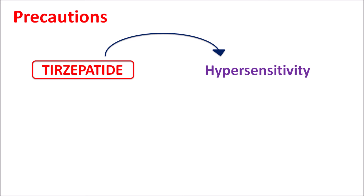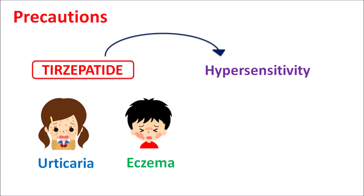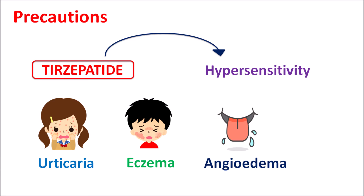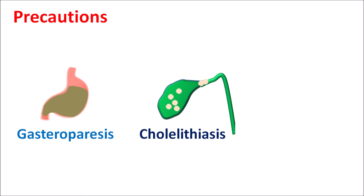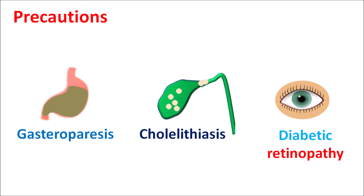When these symptoms are pronounced, kidney functionality should be checked because Tirzepatide may induce acute kidney failure in susceptible patients. Another important precaution is hypersensitivity reactions: patients may develop urticaria, eczema, and even angioedema resulting in swelling of the tongue, lips, throat, and pharynx. If any of these hypersensitivity reactions are developed, this drug should be stopped immediately to avoid fatal systemic complications. Precaution should also be maintained in patients with gastrointestinal disorders like gastroparesis, cholelithiasis (formation of gallstones), or in those with diabetic retinopathy.